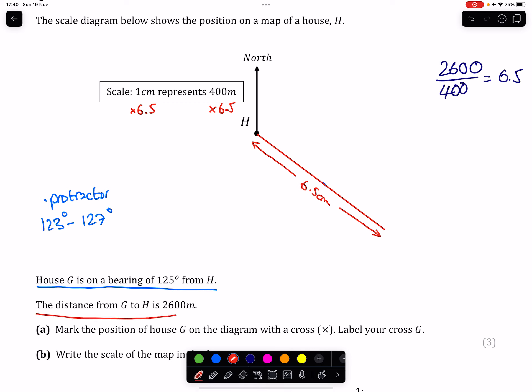So the distance here is 2600. Our bearing, our angle here clockwise from north, is 125 degrees. And as long as we've got that distance and that angle correct within reason, we have found our house G, which, based on the question, asked us to label it with a cross or draw it with a cross and then label as G.